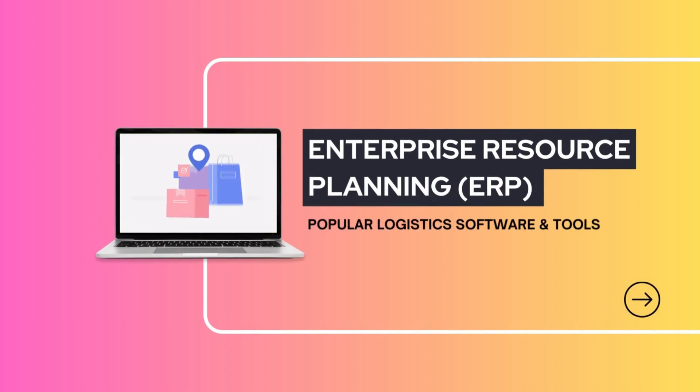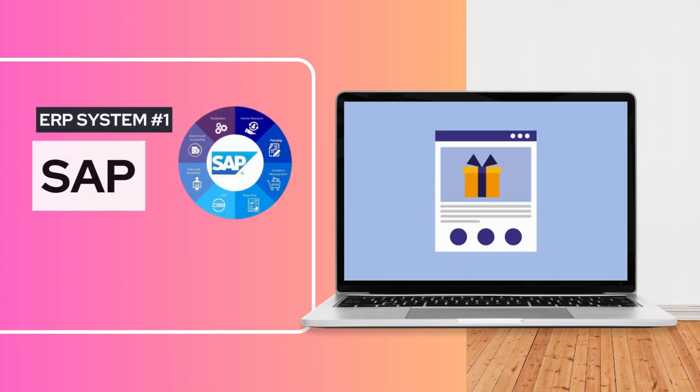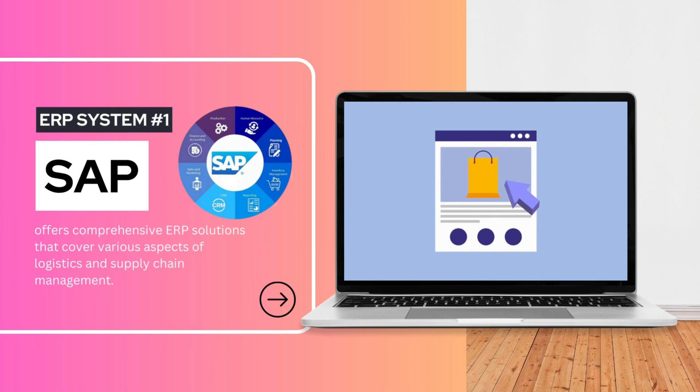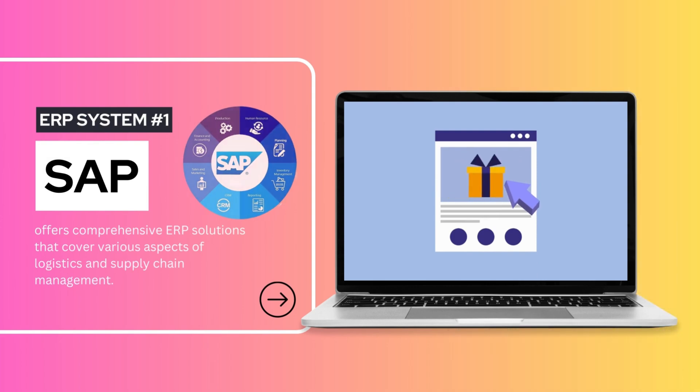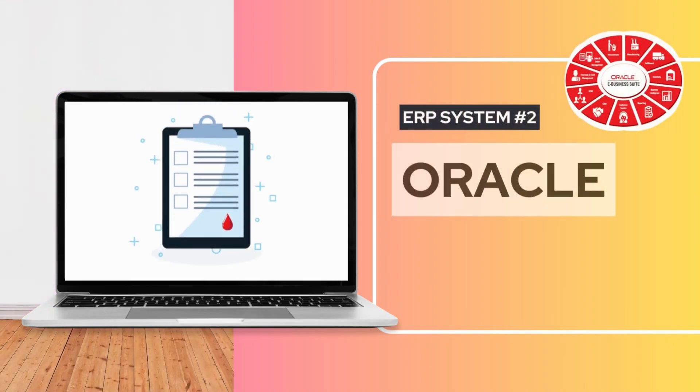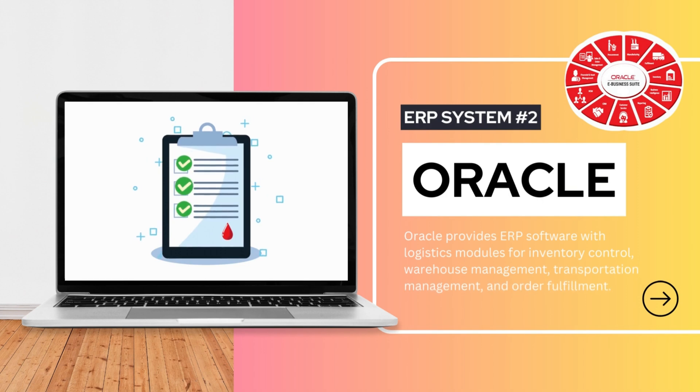First up, the first category is Enterprise Resource Planning, or ERP systems. SAP offers comprehensive ERP solutions covering a variety of aspects of logistics and supply chain management. Modules include inventory management, warehouse management, procurement, and transportation management. Next, Oracle provides ERP software with logistics modules for inventory control, warehouse management, transportation management, and order fulfillment.